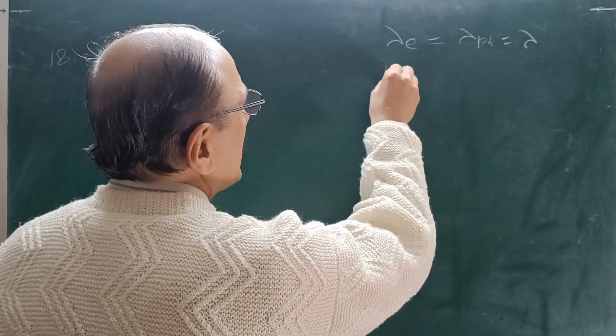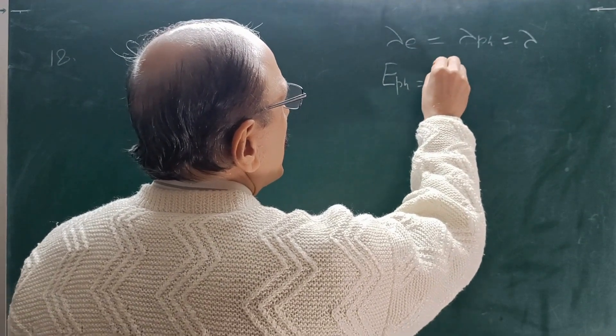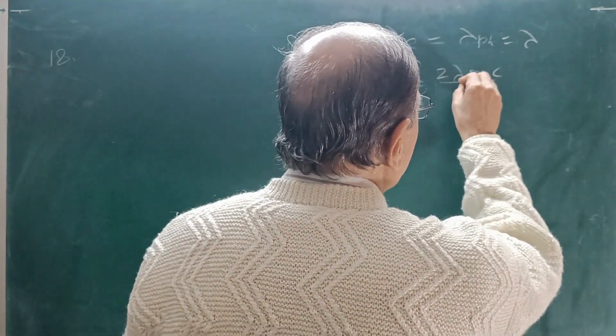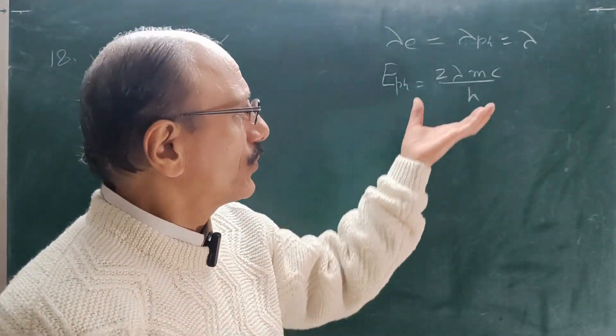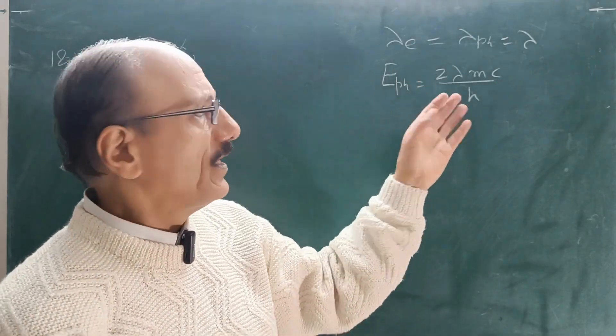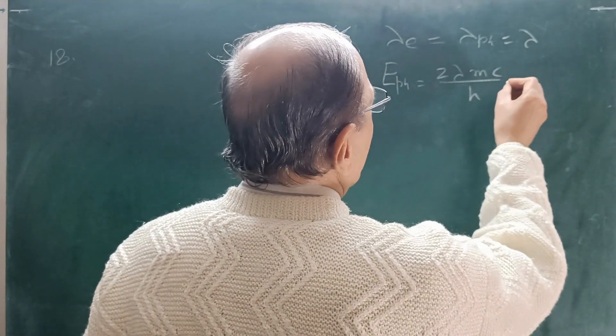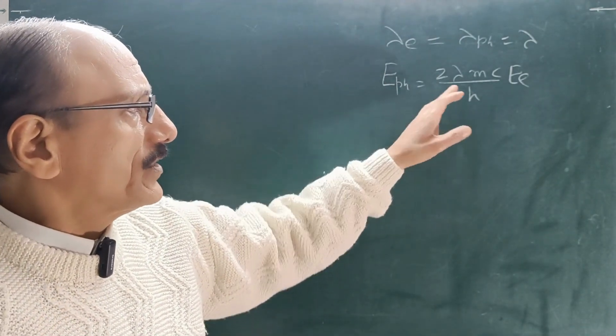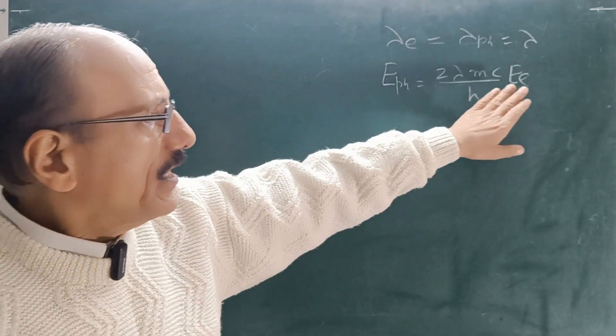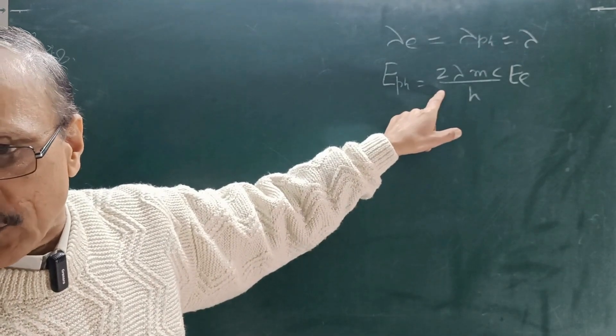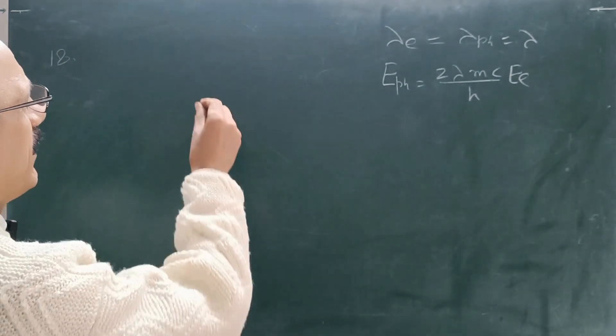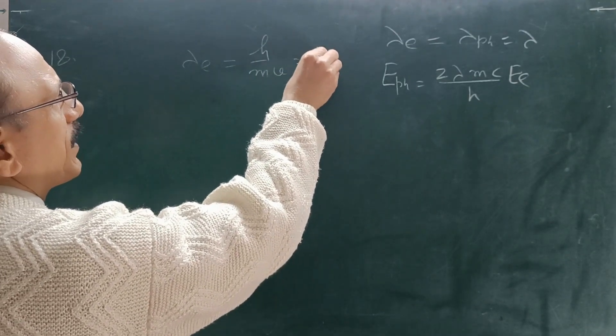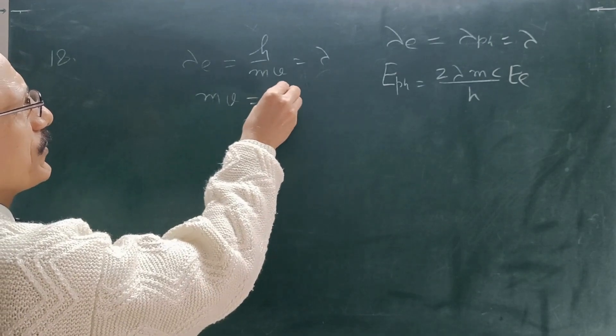Now you have to prove the energy of the photon equals to 2 lambda mc upon h times kinetic energy of the electron. So for De-Broglie wavelength lambda, that is h upon mv, that is equal to lambda. So from here you can get the value of mv equals to h upon lambda. Also the kinetic energy of the electron is equals to half mv square. Then you can simply say 1 by 2m, it will be m square v square. So we can replace mv from here.